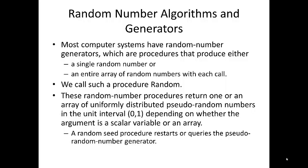Most computer systems have random number generators, which are procedures that produce either a single random number or an entire array of random numbers with each call. We call such a procedure random. The reader can use random number generators available on his or her computing system, one available within the computer language being used or one of the generators described below.